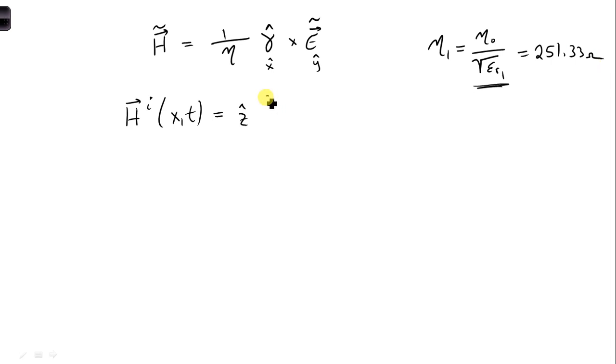So now, if we take 8 and divide by that number, 251.33, we'll get the amplitude of our magnetic field.